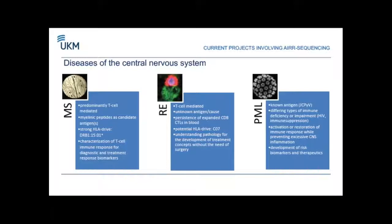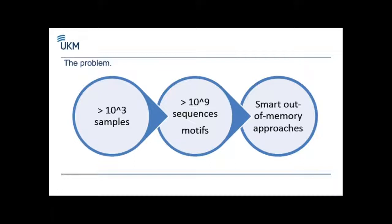In our lab we focus on diseases of the central nervous system. The three areas we're currently working on are: MS, which is predominantly T-cell mediated but also has B-cell findings and a strong HLA drive; Rasmussen's encephalitis, which has been a long-standing interest and for which we have a large collection of biosamples and sequences; and PML — progressive multifocal leukoencephalopathy — a virus-mediated brain disease that can occur during immune suppression, mostly during HIV infection. We also have a large collection to look at the immune reaction against the mediating JC polyomavirus.